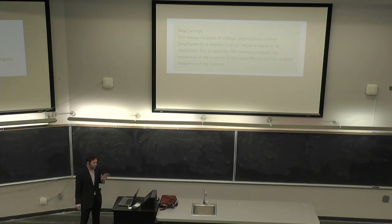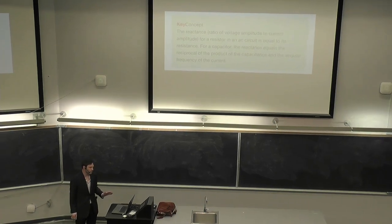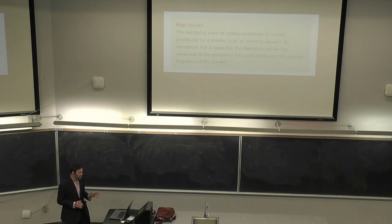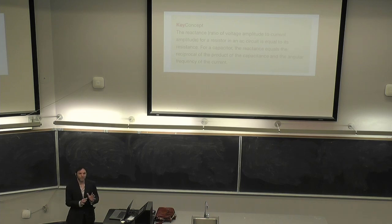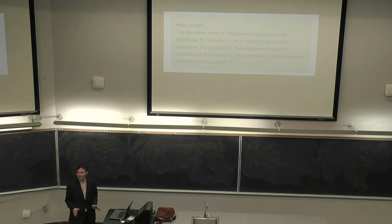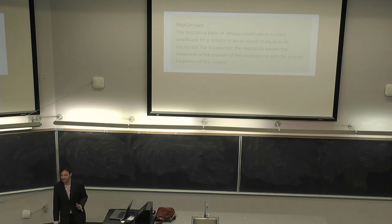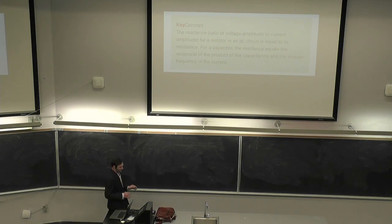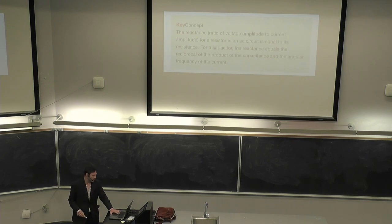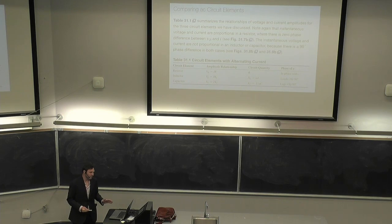Let's talk about reactance. Reactance is the ratio of voltage amplitude to current amplitude for a resistor in an AC circuit, and it's equal to its resistance. Resistance applies to AC circuits as well, but it's not defined in exactly the same way as with direct current, so we modify this concept to get reactance. For a capacitor, the reactance equals the reciprocal of the product of the capacitance and the angular frequency of the current. Here's a summary of the voltage and current amplitude relationships for the three circuit elements covered on the exam.